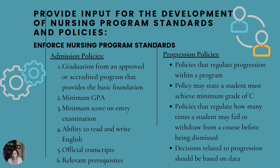Let's take a look at progression policies and what should be included there. First, we should have policies that regulate progression within a program — whatever that specific criteria is, it just needs to be clearly stated in a policy or handbook that students can easily access. Second, the policy may state that a student must achieve a minimum grade of C. It's not a mandate, but it may be included.